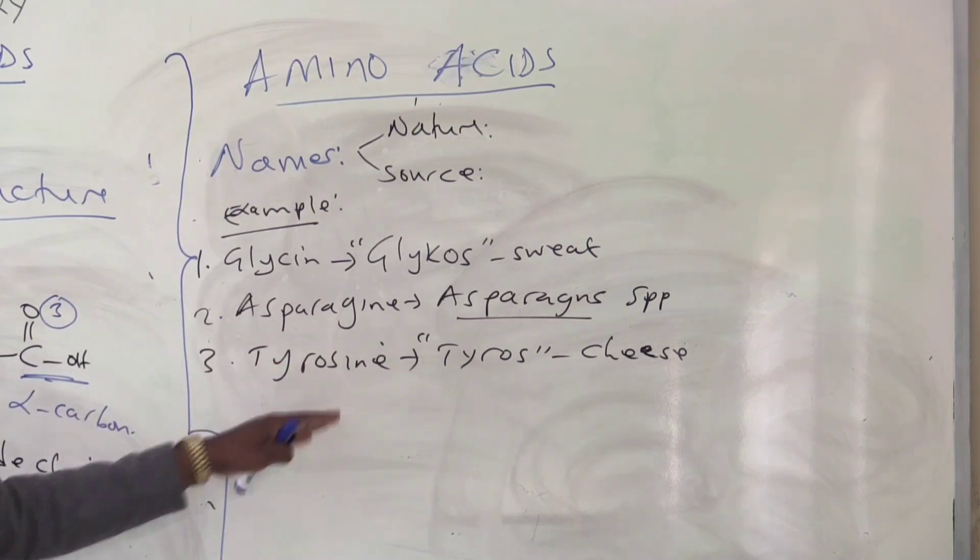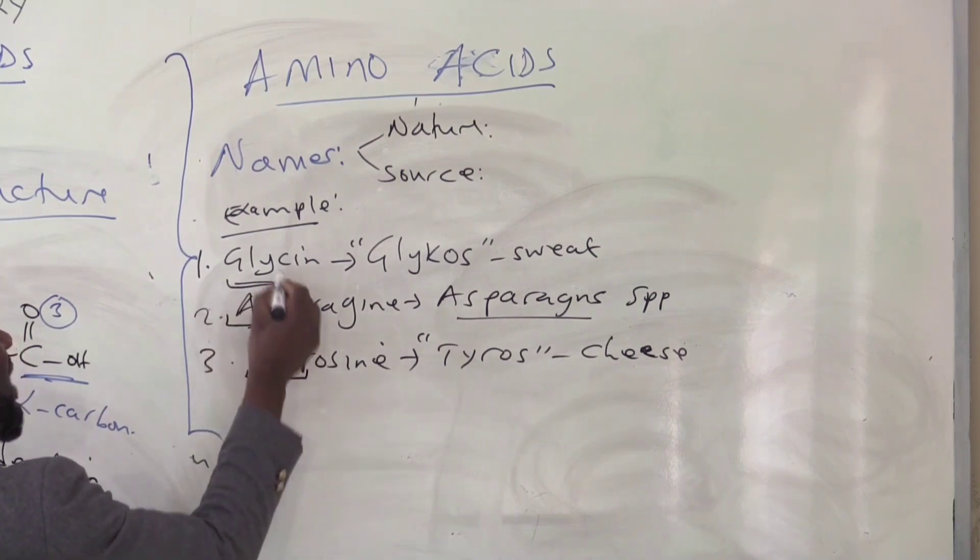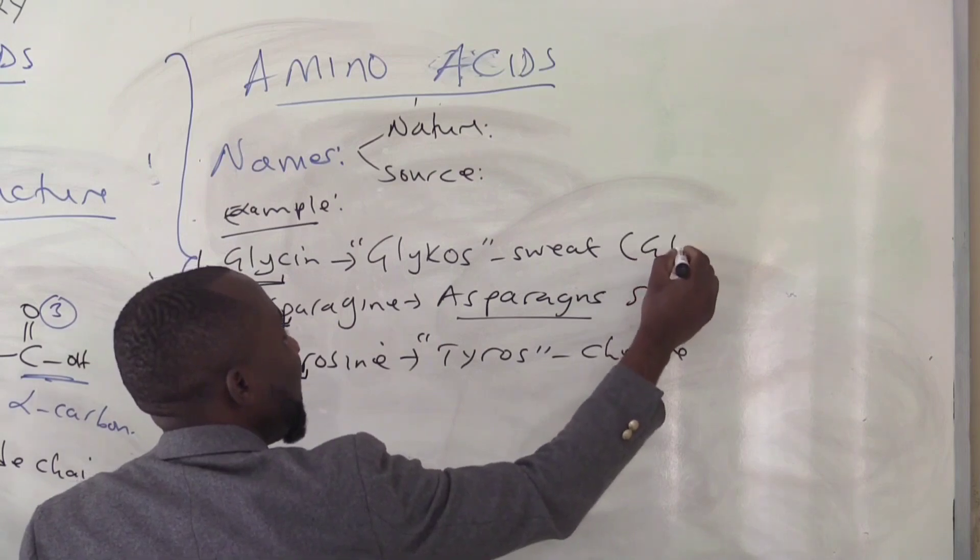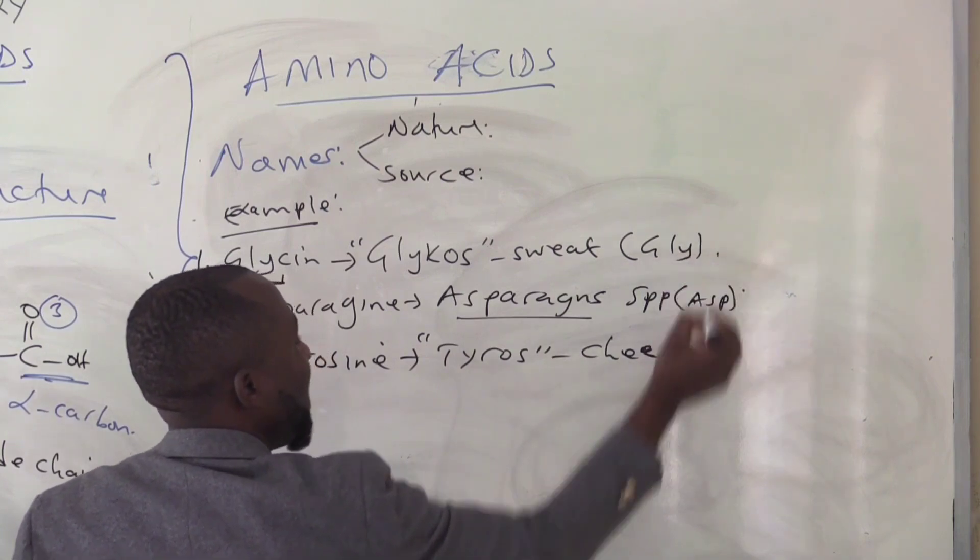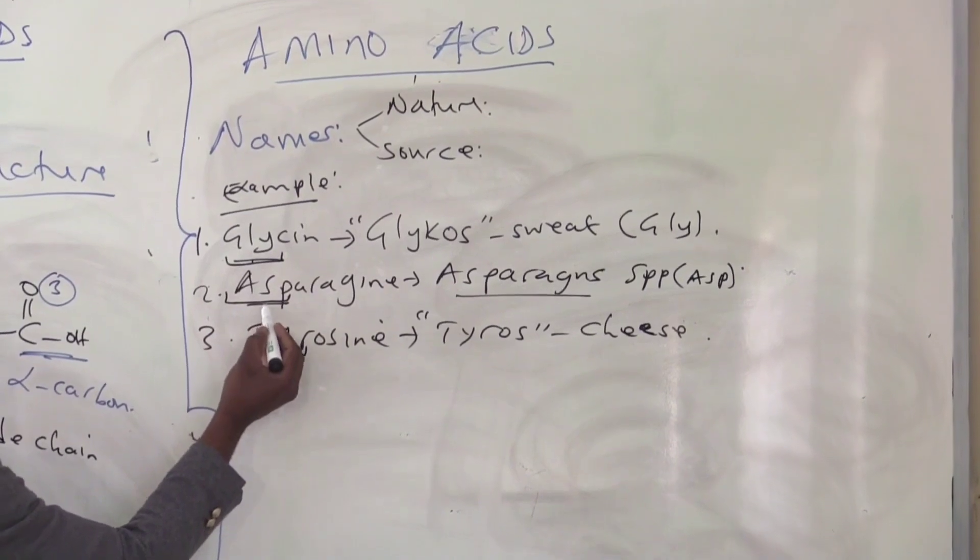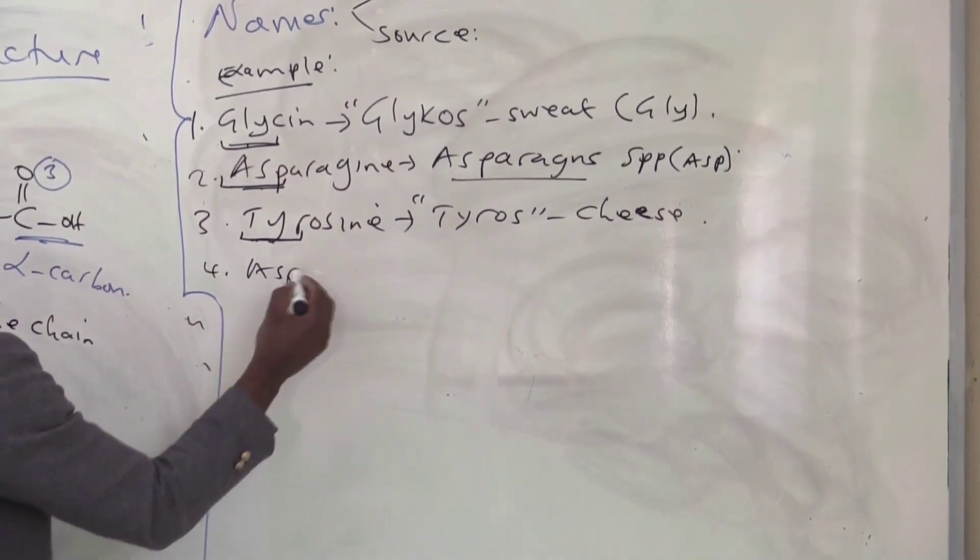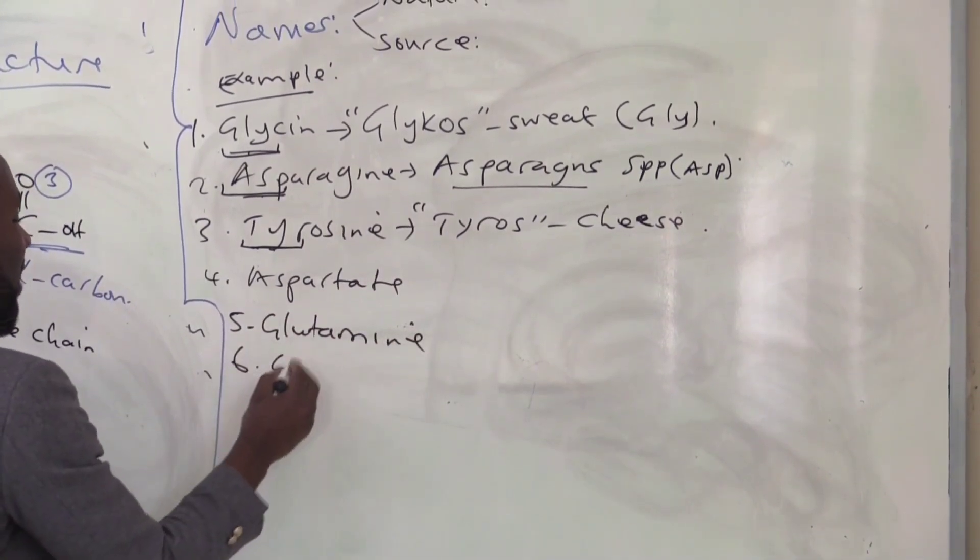Sometimes in medicine, we try to abbreviate the amino acids by using just the first three letters. So instead of writing glycine, we just abbreviate as G-L-Y. Aspartate, A-S-P. That's how we write them. So for me to help you with examples of amino acids, I'm going to include other amino acids that are used in the human body to make proteins. We have talked about glycine, asparagine, tyrosine. We can talk about aspartate, glutamine, glutamate.